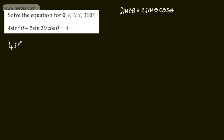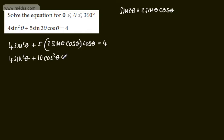So we've got now 4 sine squared theta plus 5 lots of 2 sine theta cos theta multiplied by cos theta and that is equal to 4. If I just tidy this up I can write this now as 10 cos squared theta multiplied by sine theta. So we've got now 4 sine squared theta plus 10 cos squared theta multiplied by sine theta and that's going to be equal to 4.